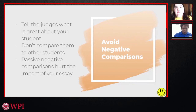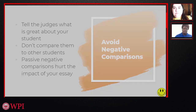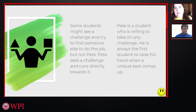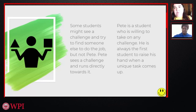Avoid negative comparisons. You want to tell the judges what's great about your student — you don't need to compare them to other students. Passive negative comparisons can hurt the impact of your essay. For example: 'Some students might see a challenge and try to find someone else to do the job, but not Pete. Pete sees a challenge and runs directly towards it.' That has a negative comparison we just don't need. It's an easy thing to build into your essay without thinking about it, so when you go back and reread, cut it out. The better version: 'Pete is a student who's willing to take on any challenge. He's always the first student to raise his hand when a unique task comes up.' That version is focused on the student without making any negative comparisons to anyone else.